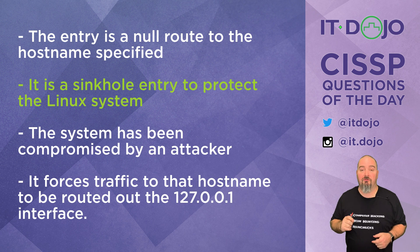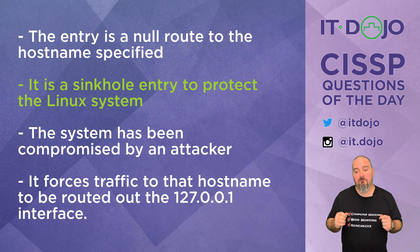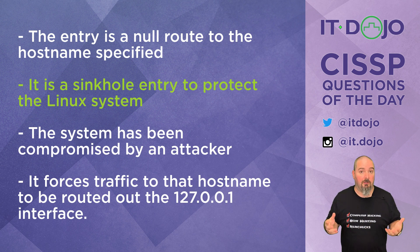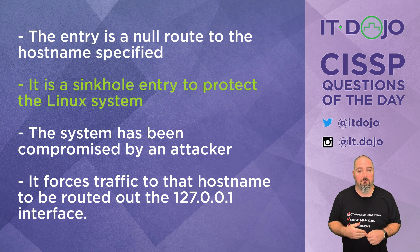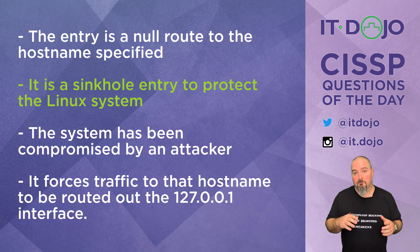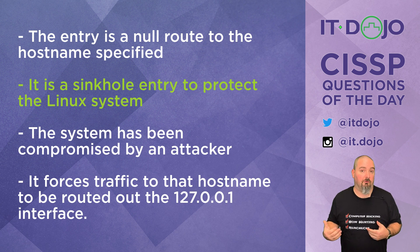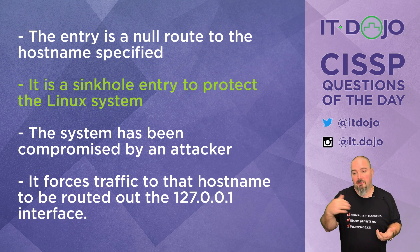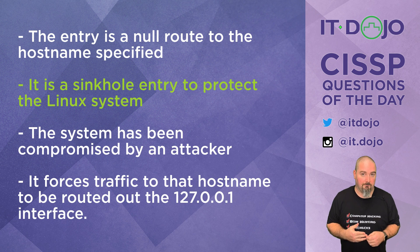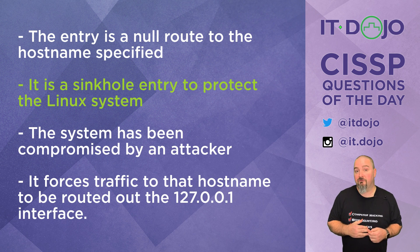By putting this entry into the hosts file, what happens is the majority of systems — Linux, Unix, Windows, macOS — all tend to check the hosts file before they go and check DNS. So on this Ubuntu workstation, if someone opens a web browser and goes to evilapp.evilsite.com, it's going to resolve to 127.0.0.1, which is loopback. So it resolves to itself, meaning the user won't actually connect to that evil website. That is very much geared towards protecting this workstation.